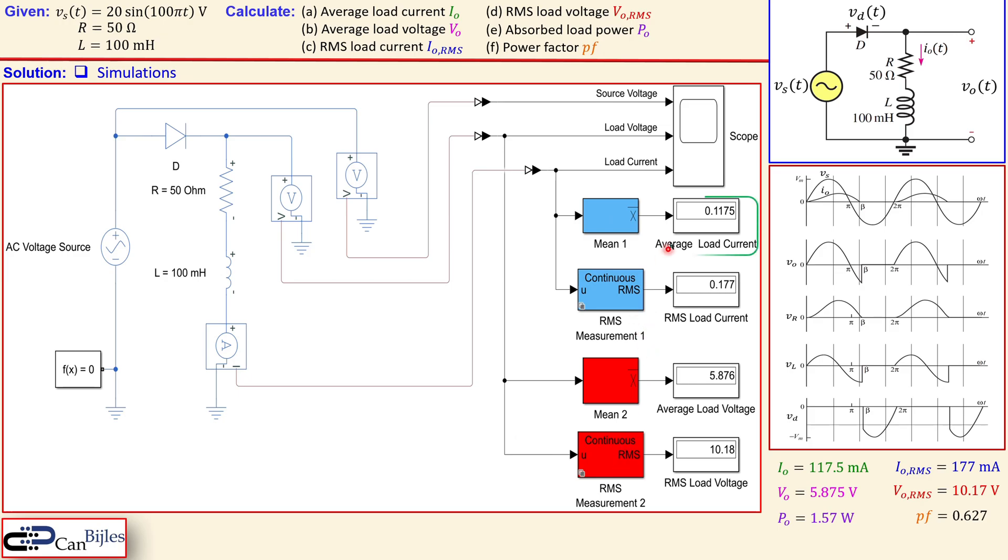What do we see? Let's go one by one. We have an average load current of 0.1175 amps, which is this, so that is checked. The average load voltage is 5.876 volts, which is very close to what we have here, so that's also checked. And we have also the RMS load current of 0.177 amps, which is what we also had, 177 milliamps. And we also have this RMS load voltage which is 10.18, which is also close to what we have calculated. Okay. So we can say in all total, this is good.